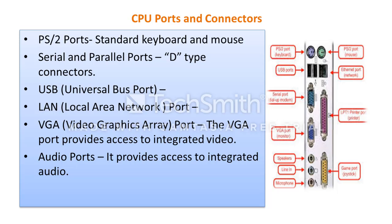CPU rear-side ports and connectors include: PS/2 port for standard keyboard and mouse connections; serial and parallel ports using D-type connectors on the rear side — input devices connect to the serial port and output devices to the parallel port; USB (Universal Serial Bus) port, the most commonly used, supporting both input and output devices; LAN port for local area network cable; and VGA (Video Graphics Array) port, which provides access to the integrated video. There is also an audio port providing access to integrated audio.